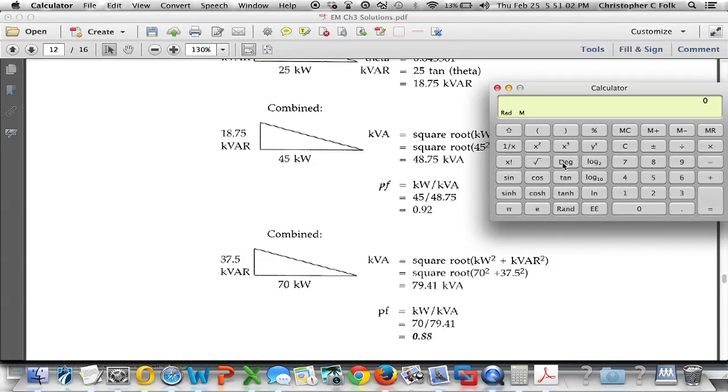And so if I clear this out and say 70 squared plus 37.5 squared and get that sum and get the square root of that sum, we're going to see now we have a combined total power of 79.4119 kilovolt amps.